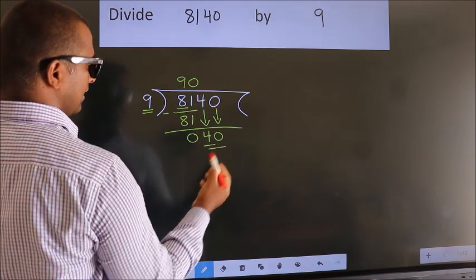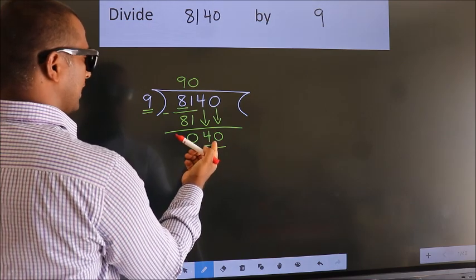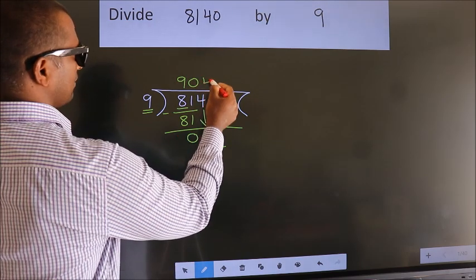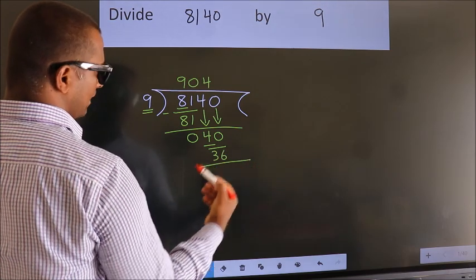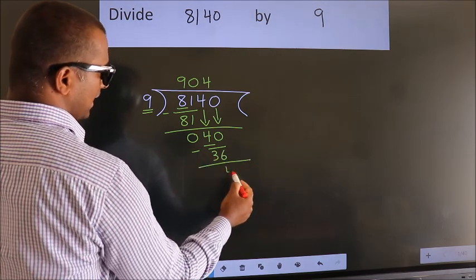So 40. A number close to 40 in 9 table is, 9 fours, 36. Now we subtract. We get 4.